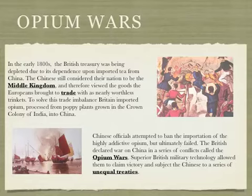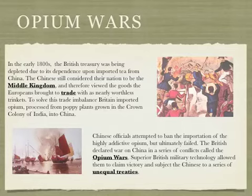The first thing we're going to talk about are the Opium Wars. In the early 1800s the British Treasury was being depleted due to its dependence upon imported tea from China. The Chinese still considered their nation to be the Middle Kingdom and therefore viewed the goods the Europeans brought to trade with as almost worthless items. To solve this trade imbalance, Britain imported opium — which is processed from poppy plants grown in the crown colony of India — into China. Chinese officials attempted to ban the importation of the highly addictive opium but ultimately failed.